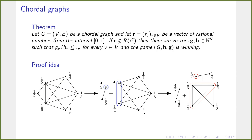For chordal graphs we proved: if we take a chordal graph and a vector of rational numbers from [0,1] that does not belong to R(G), then there exist vectors H and g of hatnesses and guessing numbers such that g_v/H_v is at most the prescribed value r_v for each v, and moreover the hat guessing game with these parameters is winning. This complements the Lovász Local Lemma application — for chordal graphs, any rational vector outside R(G) admits a winning game.